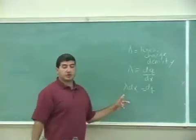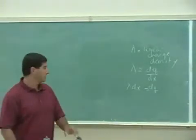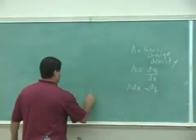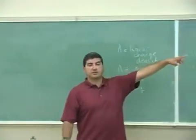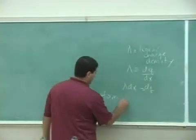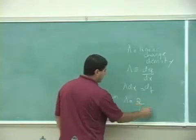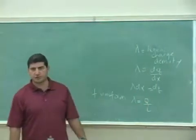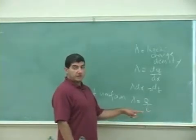And if the rod is uniform charge density, if uniform, that means the charge is equivalent everywhere, distributed the same. So therefore, lambda is just gonna equal the charge of the rod divided by the length of the rod, the total charge divided by the total length. That's only if the rod is uniform.